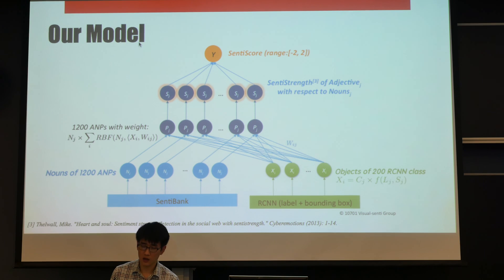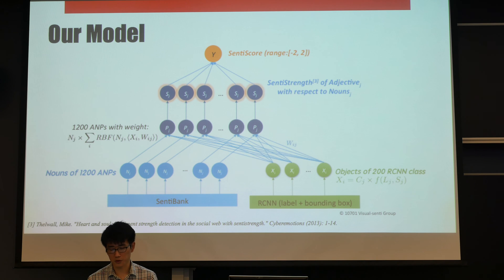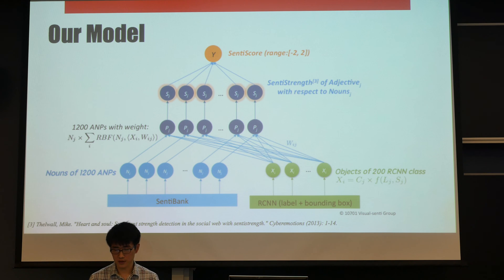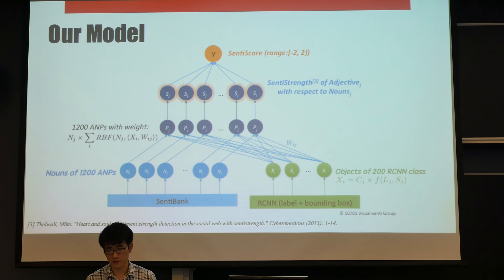Here is the network of our model. We calculate the distance between the nouns of the adjective-noun pairs and the objects of the 200 RCN classes, and multiply the initial CineBank adjective-noun pair weights with the RBF kernel of that distance. We then multiply the new adjective-noun pair weights with the CineStrengths of the adjectives and sum up to a one-dimensional CineStrength score in the range of minus two to two.